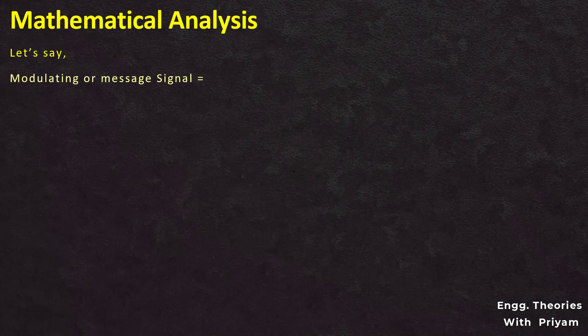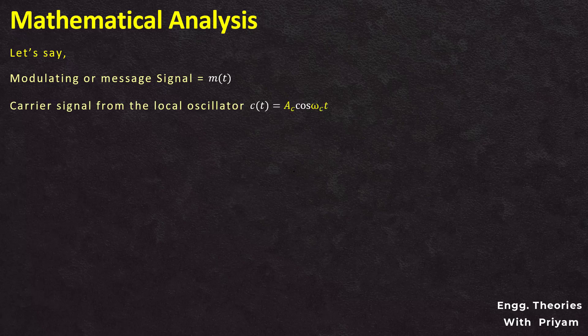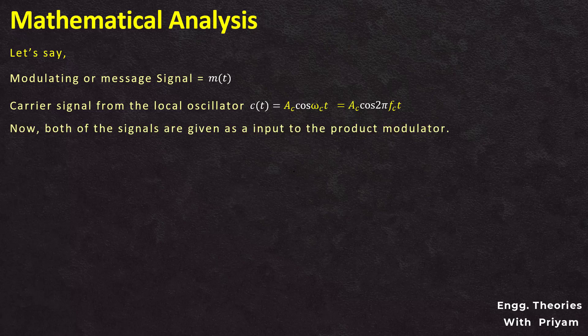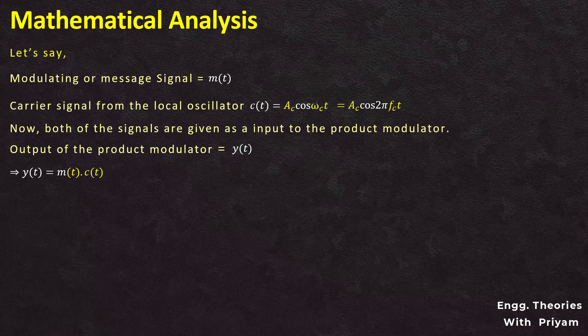Now let's see the mathematical analysis for VSB modulation. The modulating signal is m(t) and the carrier signal c(t) = Ac·cos(ωc·t) = Ac·cos(2π·fc·t). The input to the product modulator is m(t) and c(t), and the output y(t) = m(t)·c(t) = m(t)·Ac·cos(2π·fc·t).